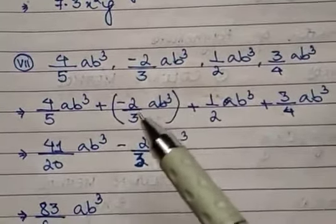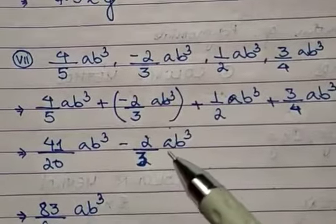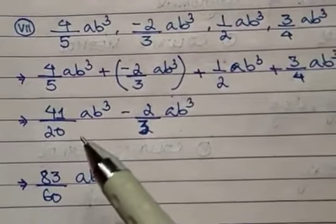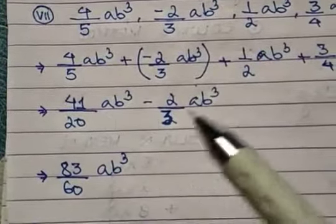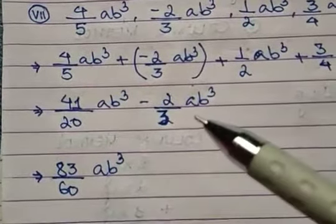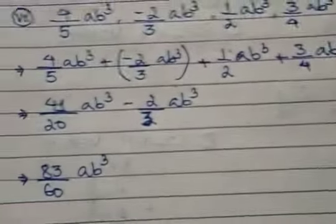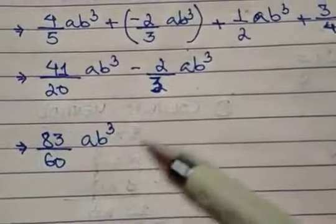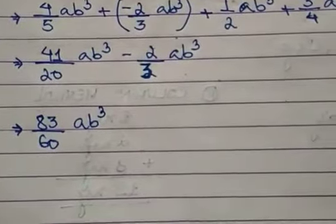The second term with the negative sign: plus × minus = −2/3 ab³. We now have two like terms with opposite signs, so they are subtracted. Taking the LCM of the fractional forms on the rough work, the answer is 83/60 ab³.